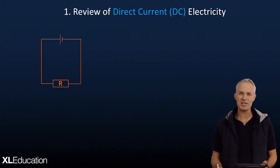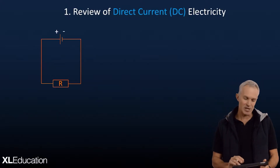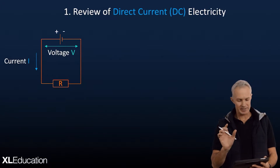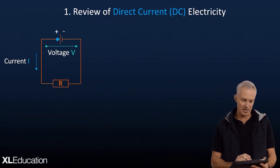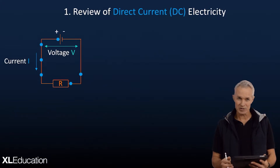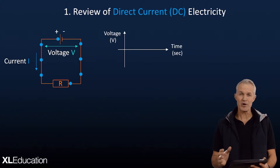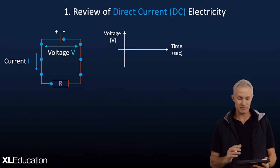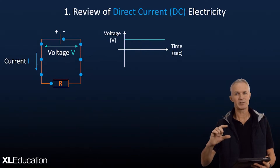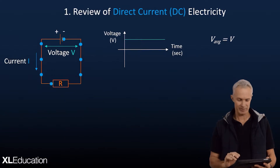First of all, back to DC — direct current. DC, as you may remember, flows in one direction. The voltage across the battery is the same voltage across the resistor in the circuit, and the current flows from positive to negative. That's the way we take conventional current to be. Looking at a graph of the voltage, if we're considering a positive voltage, it remains constant the whole time — say from a battery in a torch, that's 1.5 volts.